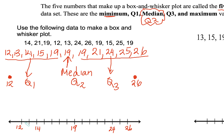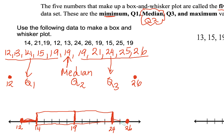I'm actually going to draw it on my number line. Minimum value is 12, our Q1 is 14, our median is 19, our Q3 is 24, and our maximum is 26. Let's make the box. There's our box. And then let's draw our whiskers. There's our box plot.